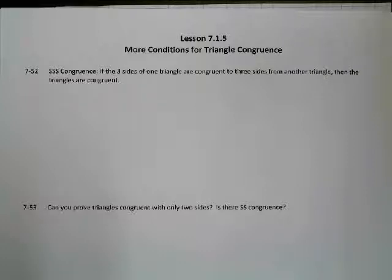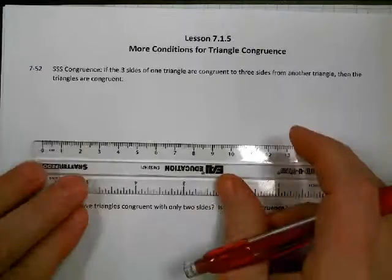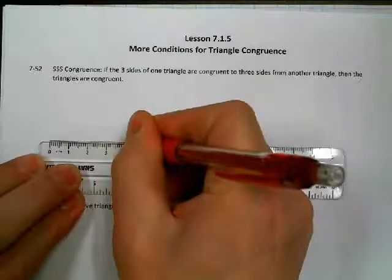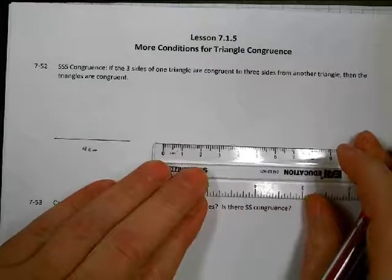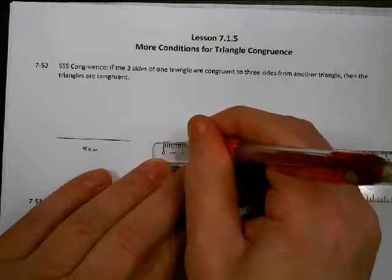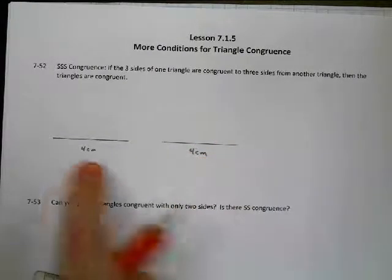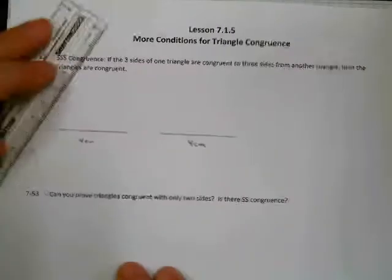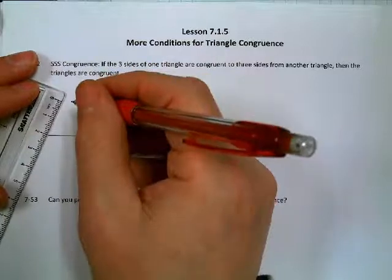The first thing we're going to look at is Side-Side-Side congruence. This says that if three sides of one triangle are congruent to three sides of another triangle, then the triangles are going to be congruent to each other. So let's say I start here with a side length of four centimeters, then another side with four centimeters, and then another one that's two centimeters long.